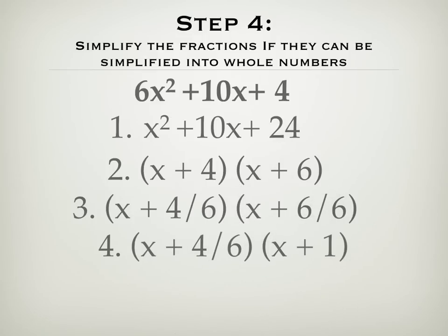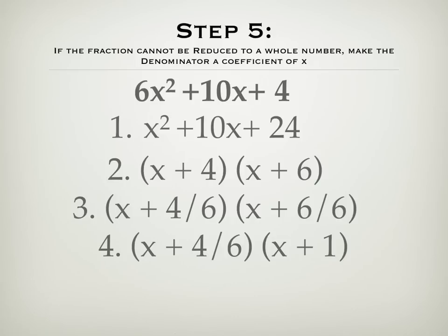Then, we get x plus 4 over 6 times x plus 1. For the one that we didn't simplify, we move the denominator over to be a coefficient of x.